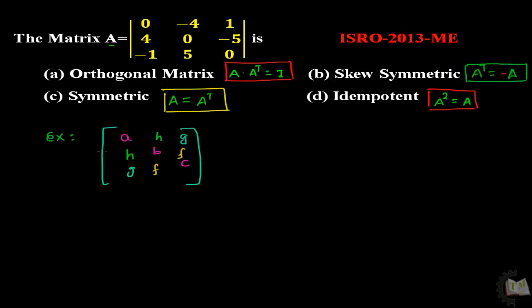Look at the question. The matrix does not look like a symmetric matrix. Next, go to skew-symmetric matrix. You will always remember in case of skew-symmetric matrix, diagonal elements must be zero. The diagonal elements are zero here, and this term and this term are negative to each other, and this term and this term are also negative to each other.